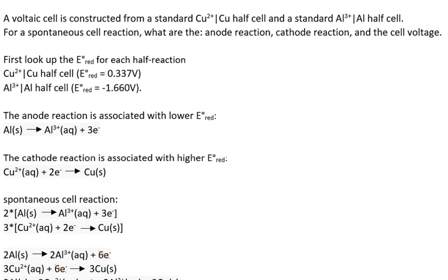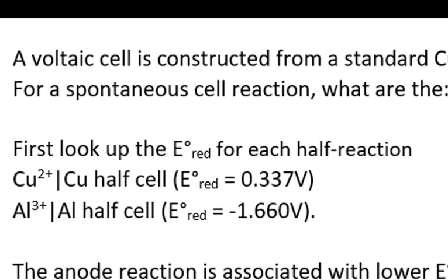In this next example, we consider the copper and aluminum half-reactions. For a spontaneous cell reaction, what are the anode and cathode reactions and the cell voltage? First, we look up the E reduction for both half-cells. Copper has a reduction potential of positive 0.337 volts, and the aluminum half-reaction for reduction is negative 1.660 volts.